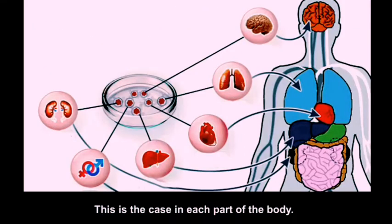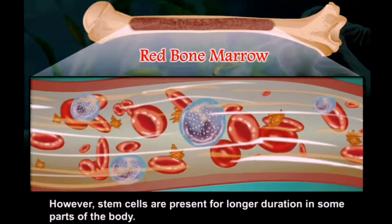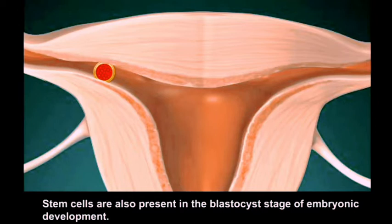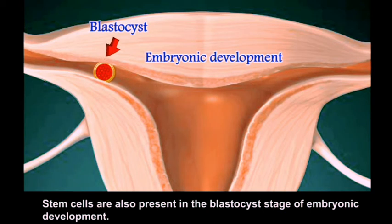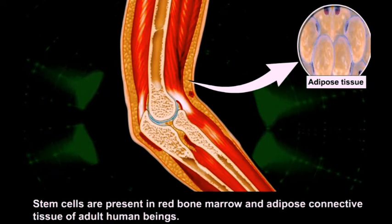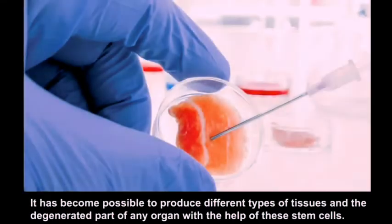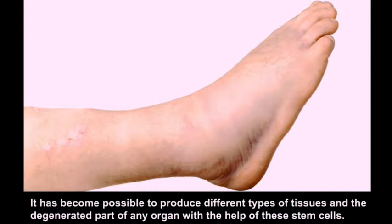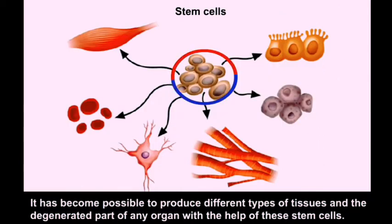Stem cells are present for longer duration in some parts of the body. Stem cells are present in the umbilical cord by which the fetus is joined to the uterus of the mother. Stem cells are also present at the blastocyst stage of embryonic development. In adult human beings, stem cells are present in red bone marrow and adipose connective tissue. It has become possible to produce different types of tissues and regenerate degenerated parts of organs with the help of stem cells.